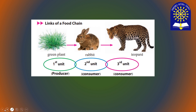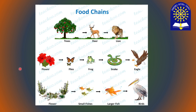Let's see some examples. In the first food chain there are three links. In this one there are five links. In the third one there are four links. And you can see the last one — a food chain that can be seen in an aquatic environment.